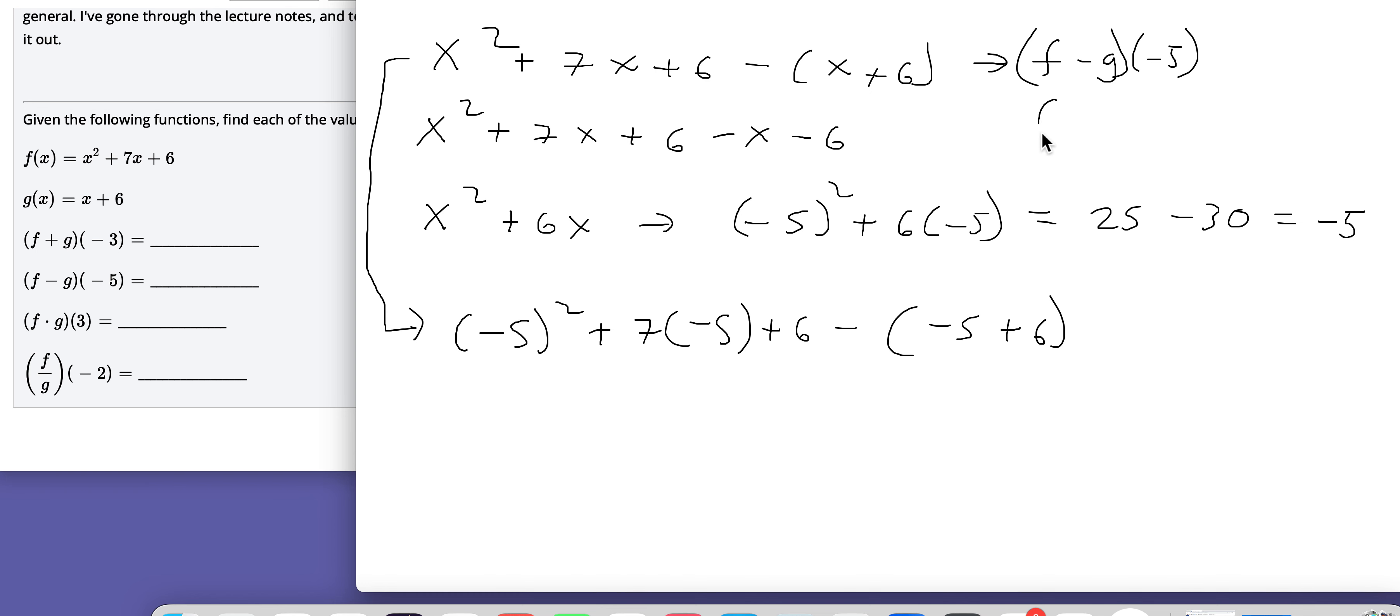That means the same thing as F evaluated at negative 5 minus G evaluated at, doesn't look much like a 5, but hopefully you know what I'm saying there. That we're just plugging the negative 5 in here and the negative 5 in here, and then we're doing the subtraction. When I did it this first time, I did the algebra first, and then I did the evaluate second.